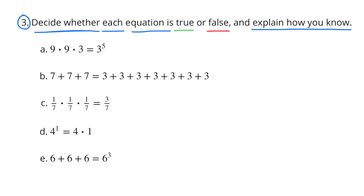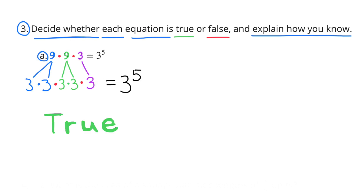Number 3: Decide whether each equation is true or false and explain how you know. A: 9 times 9 times 9 times 3 equals 3 to the power of 5. Is that true or false? Let's find out — 9 can be broken down as 3 times 3, the next 9 as 3 times 3, and then we bring down the other 3. We have 3 times 3 times 3 times 3 times 3, which is 3 to the 5th power. So that is true.